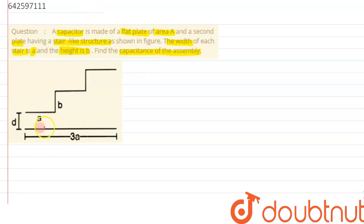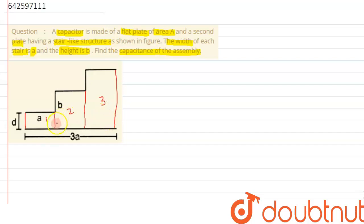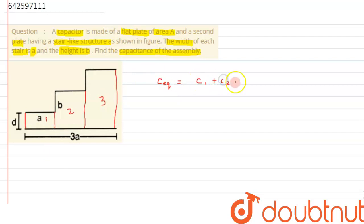If we carefully analyze, we can see the whole area of the plate can be divided into three capacitors — this can be the first capacitor, this can be the second capacitor, and this can be the third capacitor. Since the area is getting divided between the plates, the three capacitors are in parallel, so by the parallel combination formula we can write: C_eq = C1 + C2 + C3.